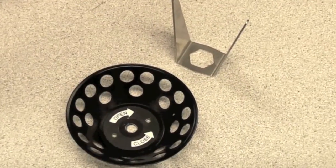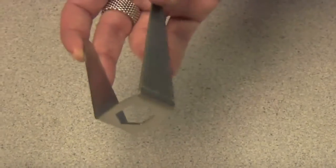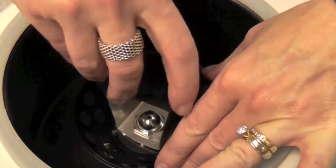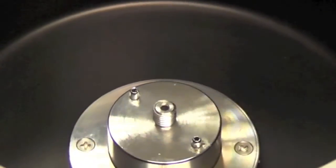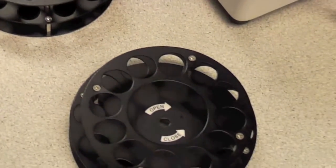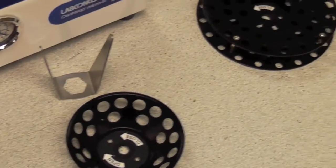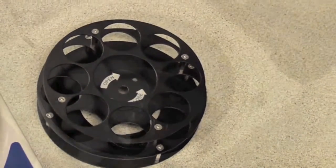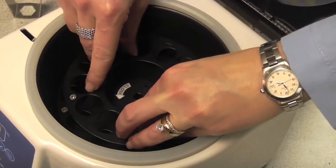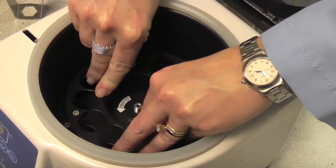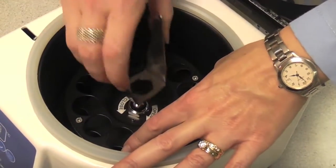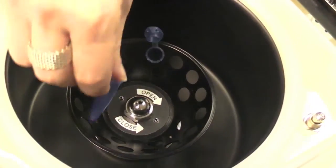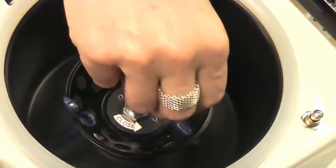The aluminum Teflon-coated rotor for 24 1.5 mil tubes is included. Four additional rotors are available to accommodate various tube sizes. The rotors hold the sample tubes at an angle to maximize the surface area.